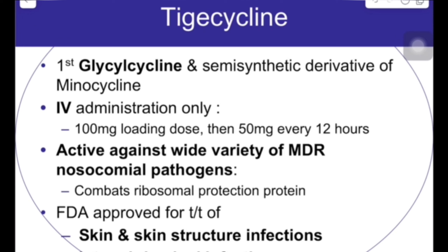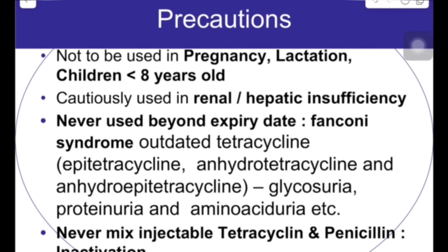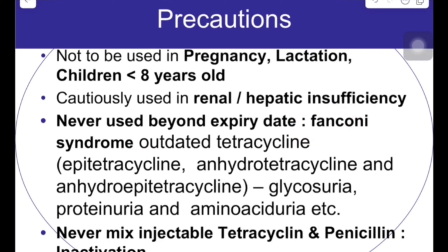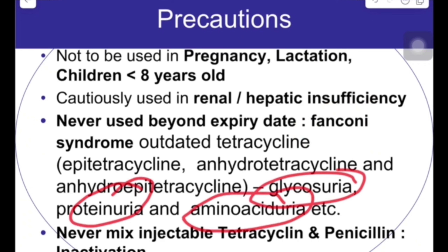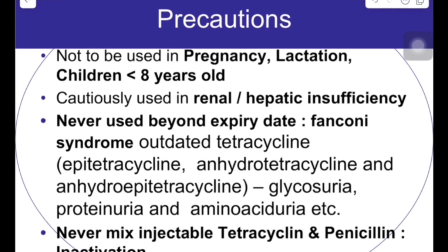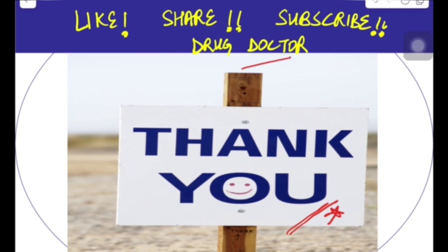Precautions for tetracyclines: not given in pregnancy, lactation, or in children. Not given in hepatic or renal failure. Not given in Fanconi syndrome. Never give expired or outdated tetracyclines, because they form different metabolites — epitetracycline, anhydrotetracycline, or anhydroepitetracycline — which cause kidney damage, glycosuria, proteinuria, and aminoaciduria. Also, tetracyclines should never be mixed with penicillin as it causes inactivation of the total product.